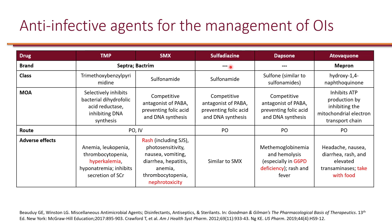We also have sulfadiazine, which is also a sulfonamide and very similar to sulfamethoxazole. We have Dapsone, which is similar to sulfonamides — Dapsone can cause methemoglobinemia and hemolysis, especially in patients with glucose-6-phosphate dehydrogenase (G6PD) deficiency, so it is recommended to test patients for G6PD deficiency before use; if they have that deficiency, it's best to avoid Dapsone. Atovaquone inhibits ATP production by inhibiting the mitochondrial electron transport chain, and it is very important to take atovaquone with food to increase absorption.